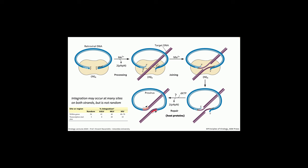Integration is not random. If integrated randomly, you'd expect 26% of integrations within genes and 5% at transcription start sites, given genome size proportions. But looking at ASLV, MLV, and HIV, these viruses are all higher than random. HIV is very high for integration within genes. So integration happens everywhere on every chromosome, but preferentially occurs within genes or at transcription start sites.